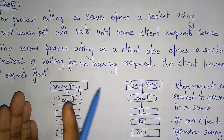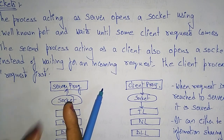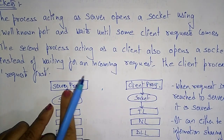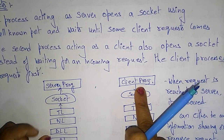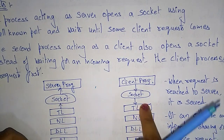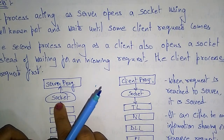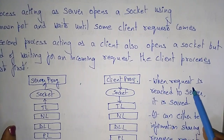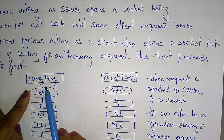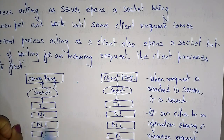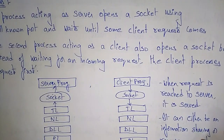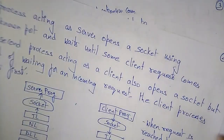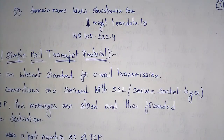The server opens a socket using a well-known port and waits until a client request comes. The client process requests first — like a student asking a teacher what to do — then the server responds. When the request reaches the server, it is served. It can be either information sharing or a resource request. This is about the application layer and the client-server model.